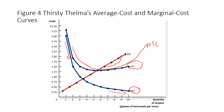The marginal cost increases with each and every unit because of diminishing marginal productivity — each additional unit of labor produces less, making each unit costlier. So the marginal cost curve is upward sloping. Average variable cost also increases over time and pushes the average total cost curve upwards.